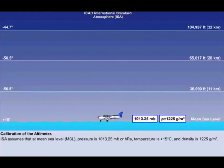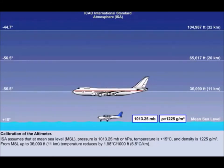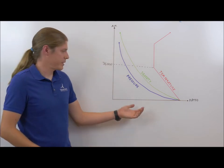Firstly, mean sea level pressure is 1,013.25 millibars or hectopascals, and the temperature is plus 15 degrees Celsius, while the air density is 1,225 grams per cubic meter. Secondly, from mean sea level up to 36,090 feet or 11 kilometers, temperature is assumed to reduce by 1.98 degrees Celsius per thousand feet or 6.5 degrees Celsius per kilometer. The international standard atmosphere looks something like this.